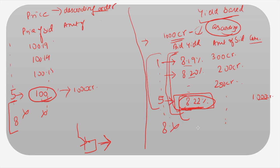Multiple price will be cheaper for the government than the uniform price basis, because under uniform pricing the government pays 8.22% to every investor, whereas under multiple pricing it pays a lower yield to earlier bidders. In competitive bidding, an investor bids at a specific price or yield and is allotted securities if the price or yield quoted is within the cutoff price or yield.